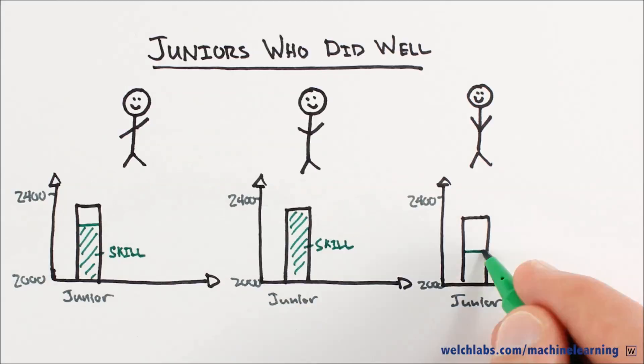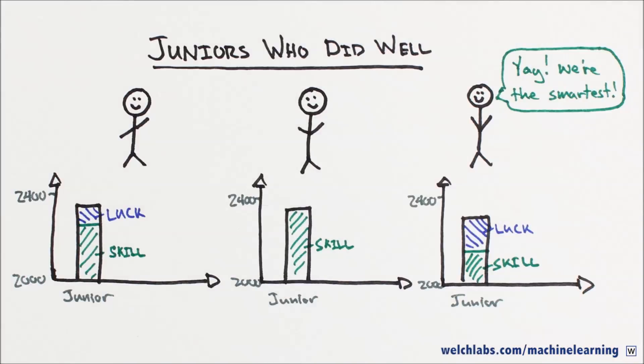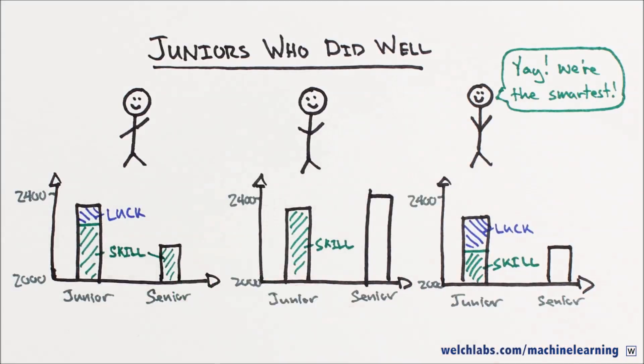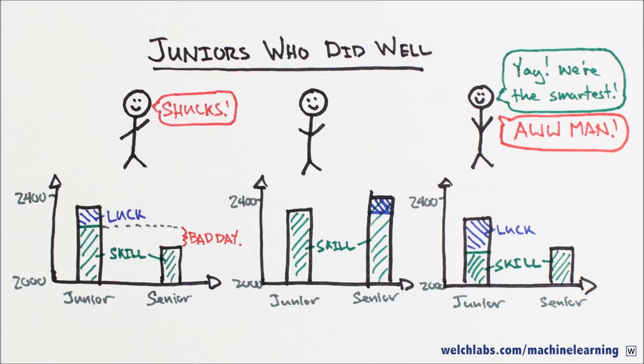The signal being the underlying aptitude of a student, and the noise being other factors that affect test scores, basically if the student had a good day or not. Of the students who did well the first time, we expect a disproportionate number to have had a good day. And since having a good day is random, when this subset of students have a regular or bad test day on their next test, their scores, on average, will go down.